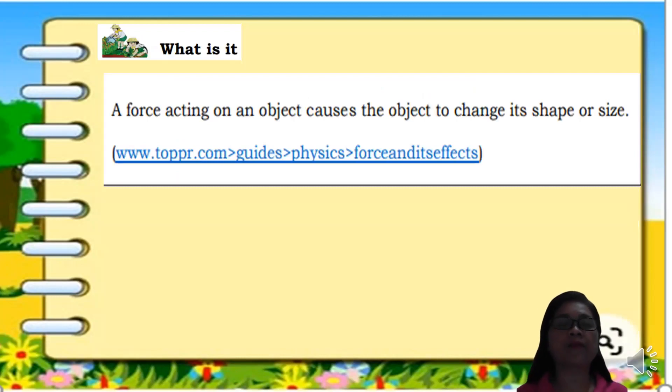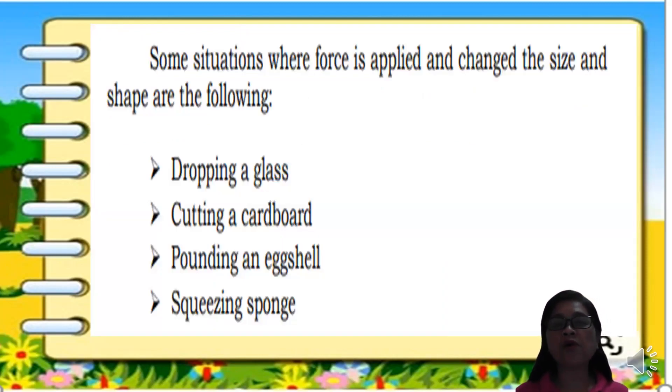Now, what is it? A force acting on an object causes the object to change its shape or size. Some situations where force is applied and change the size and shapes are the following: dropping a glass, cutting a cardboard, pounding an eggshell, and squeezing plants. There are lots of examples of situations where force is applied and the size and shape of the objects are changed.